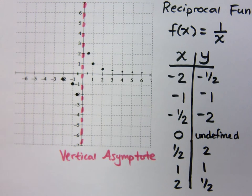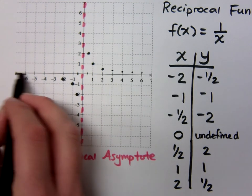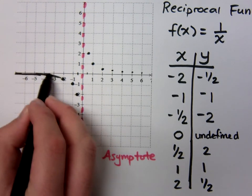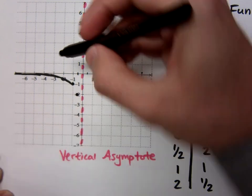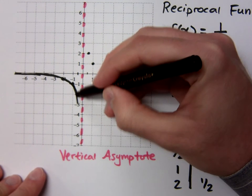And notice what happens is your graph comes along here. As you're coming from the left, this guy gets closer and closer to 0. But when he gets closer to it, he starts to curve and open, and he goes down.